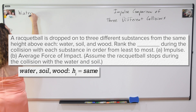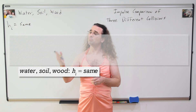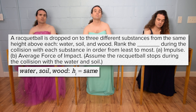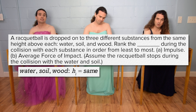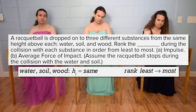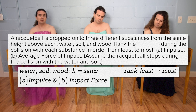Rank the blank during the collision with each substance in order from least to most. Part A: impulse. Part B: average force of impact. From least to most, rank impulse and average force of impact during each collision.